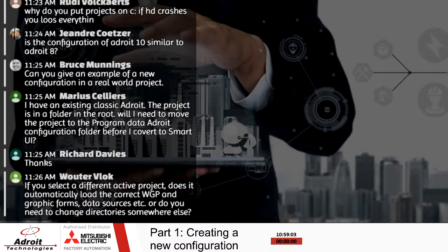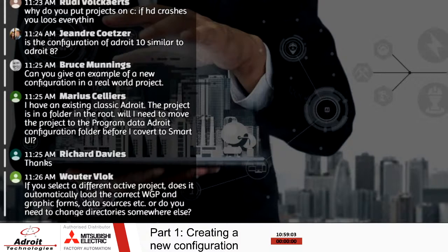I have an existing classic Adroit project in a folder in the root. Will I need to move the project to the Program Data Adroit configuration folder before I convert to Smart UI? Your classic Adroit configuration can stay in its original root directory if you so desire. Obviously for backing up, you'll need to configure the backup to take into account that your routing has changed — those settings can be done in your system backup folders and you can add those routes for backing up. However, for converting to a true Smart UI project using the conversion process, I would recommend getting in contact with our support department. The biggest challenge there is pathing and making sure all your files link up to the existing and new file locations.